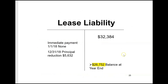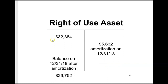Looking at the T-accounts: the lease liability started at $32,384, no immediate payment on January 1, 2018, and at year-end we subtracted the principal portion of $5,632, bringing us to a year-end balance of $26,752. That's the balance of the lease liability immediately after the first payment on December 31, 2018 — a number they could easily ask on the CPA FAR exam.